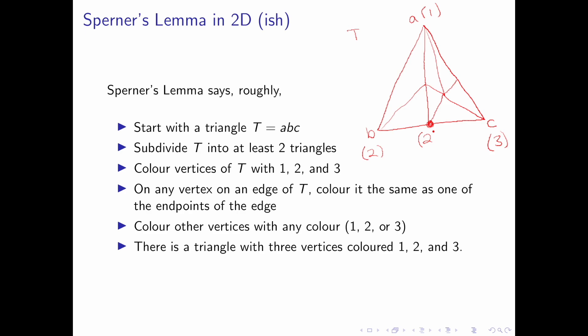This cannot be colored 1 by definition of how we are doing the coloring. This vertex here must be colored 1 or 3. Let's assume it is colored 3.